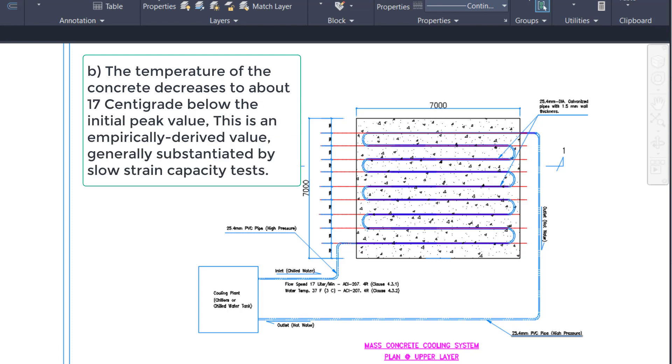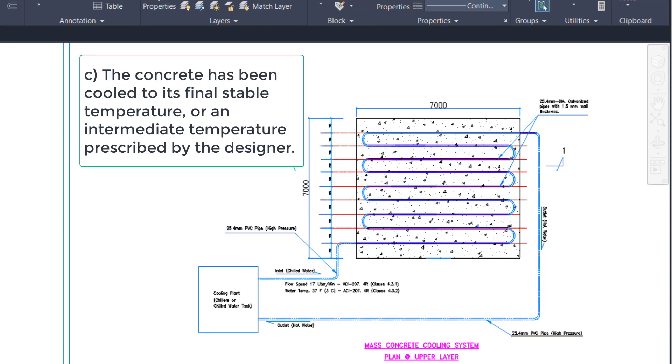Or B: The temperature of the concrete decreases to about 17 centigrade below the initial peak value, this is an empirically derived value generally substantiated by slow strain capacity tests. C: The concrete has been cooled to its final stable temperature or an intermediate temperature prescribed by the designer.